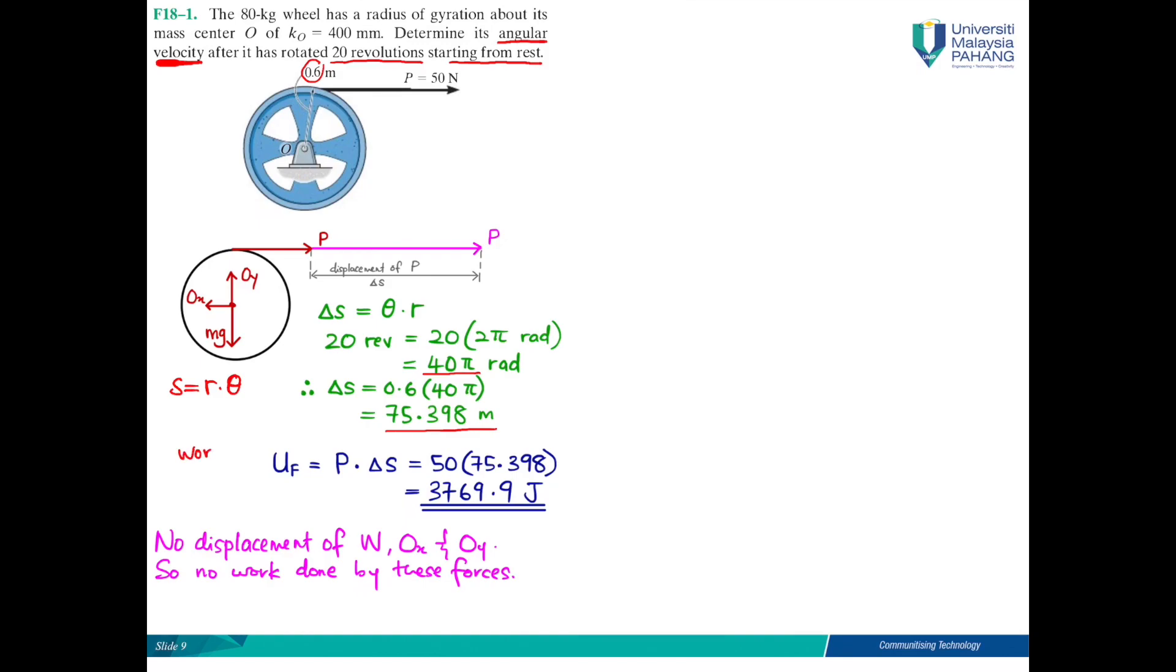Therefore, once we have delta s, we can calculate the work done by the force P. We can write it as Up or Uf, which equals the force multiply with the displacement. So you have 50 newton force multiply with 75 delta s, you have 3769.9 joules.